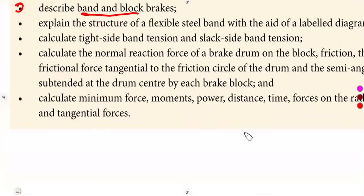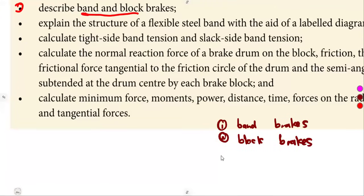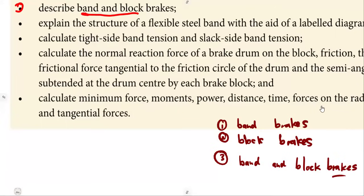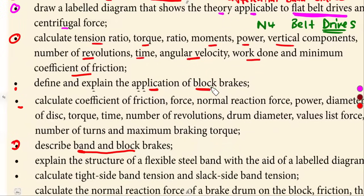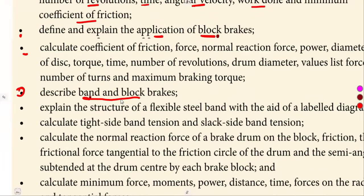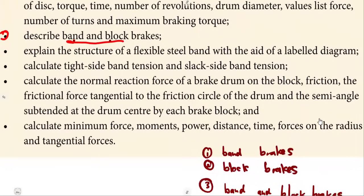We have the bend brakes as the first type, then we have the block as another type, and the third one is a combination of these — you can call it block and bend, or bend and block. That is what we're going to need, these three types. Here we talked about the bend, here we talked about the block, and now here we are talking about bend and block. We also need to explain the structure of a flexible steel bend with the aid of a labeled diagram.